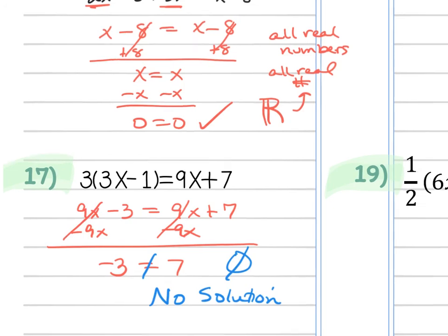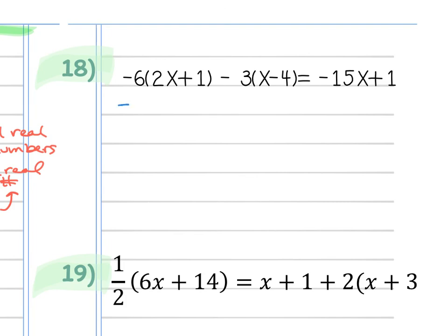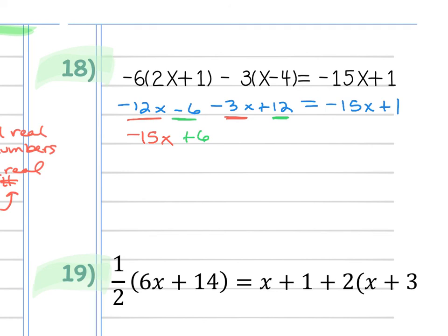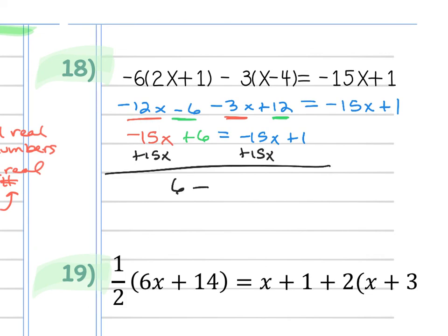Two more examples. Distributing gives -12x - 6 and -3x + 12. Combining x's gives -15x, and combining constants gives +6, equaling -15x + 1. When I try to group the x's they cancel, and I'm left with 6 = 1, which is nonsense — so no solution. It doesn't matter which side you move the numbers to; as soon as you get a statement that's not true, the answer is no solution.